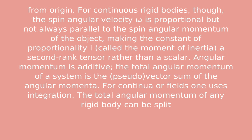For continuous rigid bodies, the spin angular velocity omega is proportional but not always parallel to the spin angular momentum of the object, making the constant of proportionality i a second rank tensor rather than a scalar.